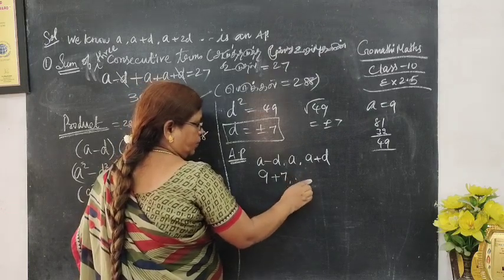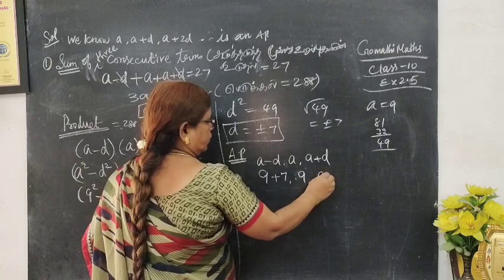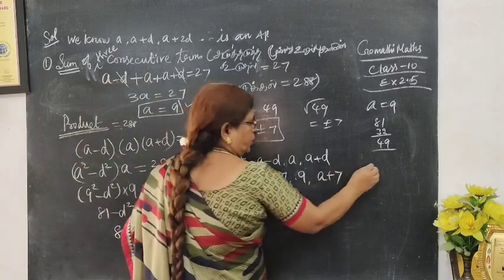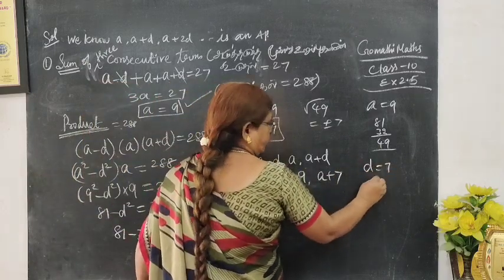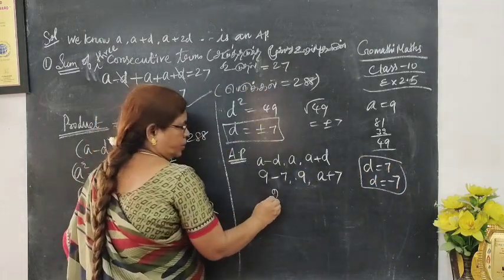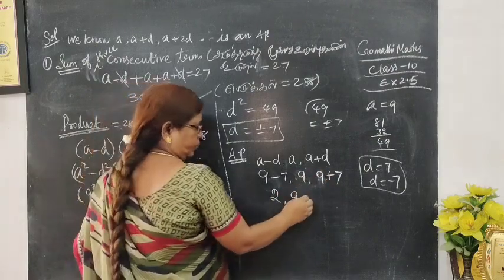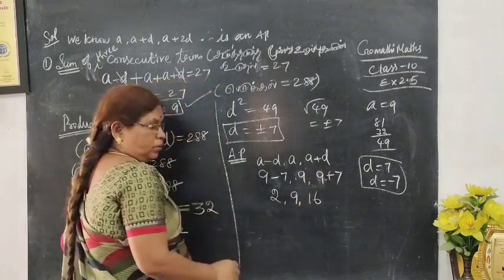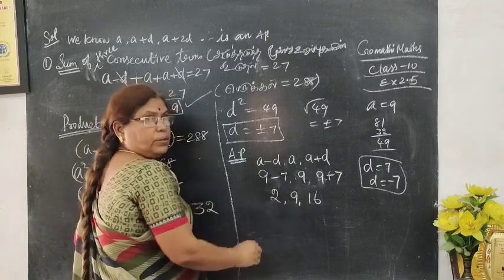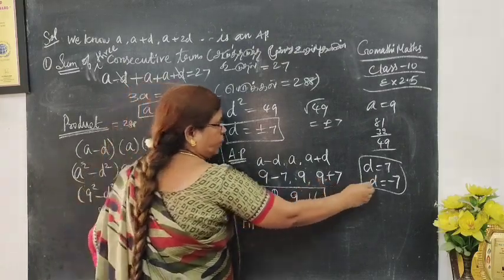When a is 9 and d is 7, the terms are: 9 minus 7 equals 2, then 9, then 9 plus 7 equals 16. So 2, 9, 16. Suppose d value is minus 7, then we get the other sequence: 16, 9, 2.